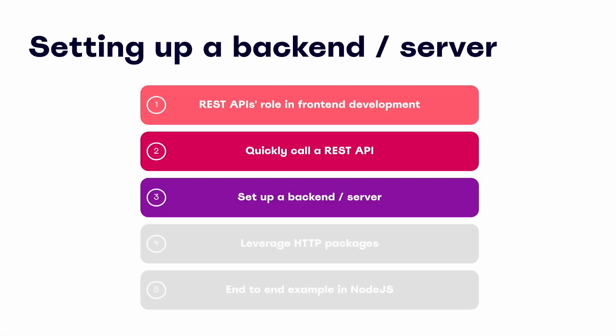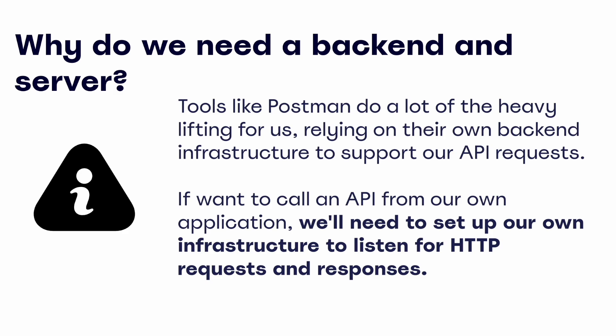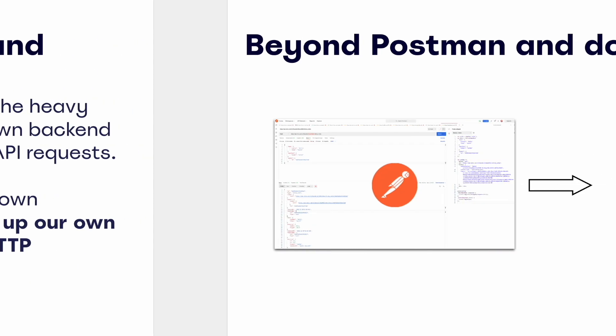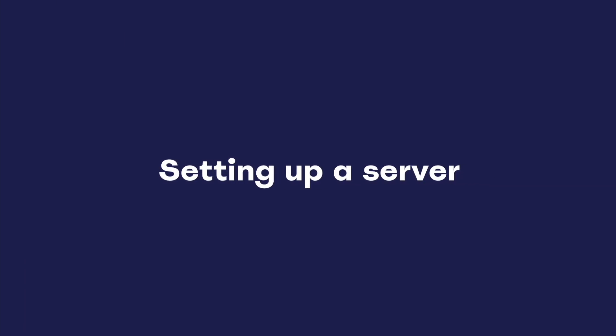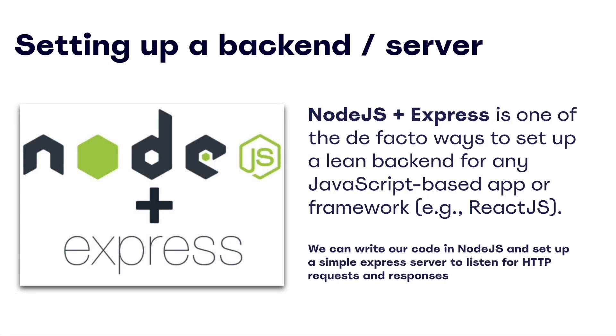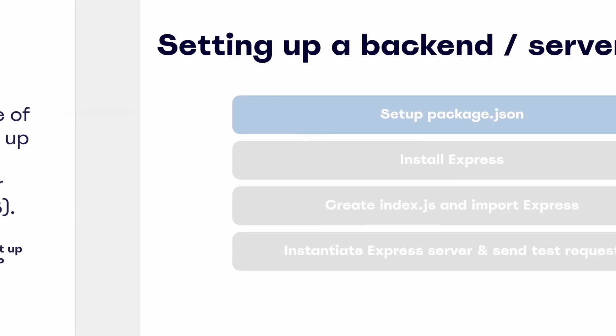So far we've talked about REST API's role in front-end development and explored how to get started with quickly calling an API. Now it's time to dive into a common prerequisite for creating a script or application of our own to call a REST API — setting up a server. Postman and related tools are great for some quick testing, but in order to incorporate APIs into our own applications, we oftentimes need to set up a basic backend and server. There are exceptions to this, such as serverless functions and frameworks like Next.js, but we'll stick to the basics for now. Let's focus today's example on a simple Node.js and Express backend server combo — a lightweight, easy way to set up some infrastructure for us to make some API requests.